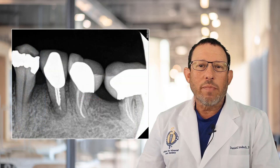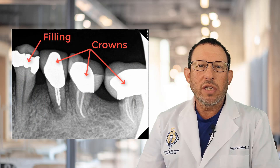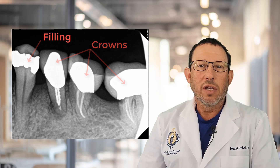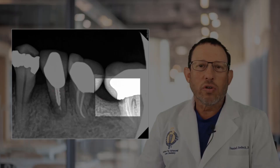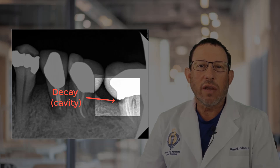When there are complex dental restorations on the teeth, there are additional things we look at. We look to see if the crowns or the fillings fit precisely. We observe for any decay forming on the sides of the teeth or any recurrent decay forming underneath restorations.